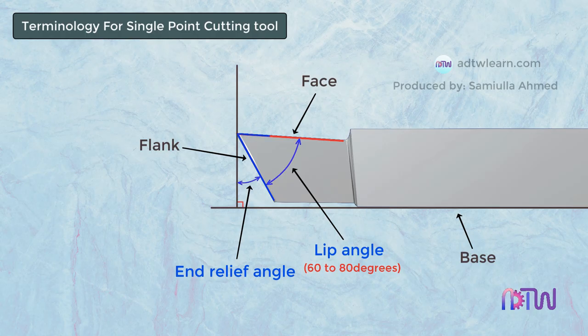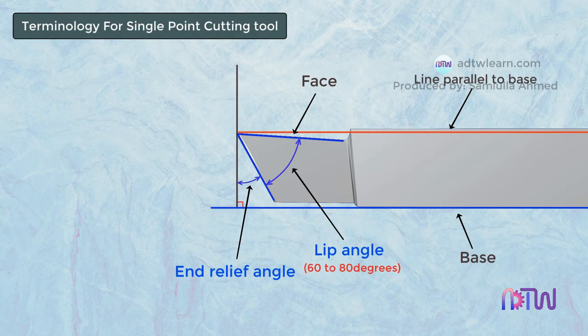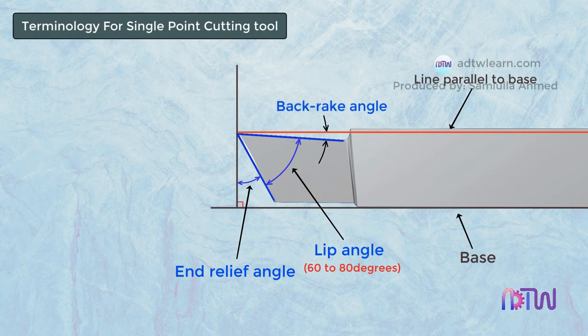The angle made by the tool face with the line parallel to the base of the tool, when we measure the angle through the plane perpendicular to the side cutting edge, is called the back rake angle.